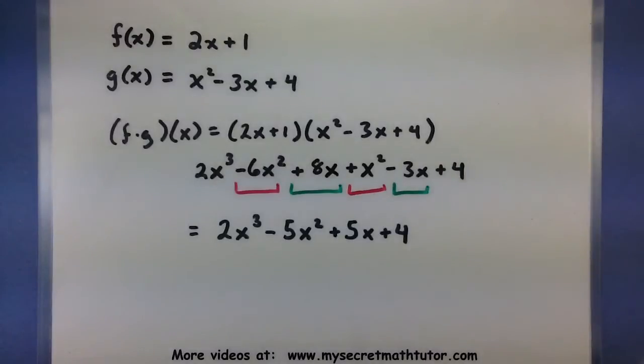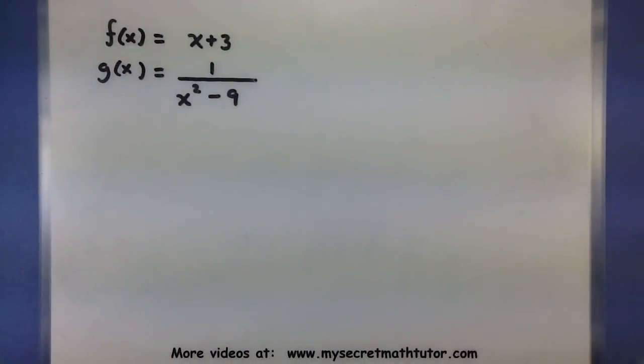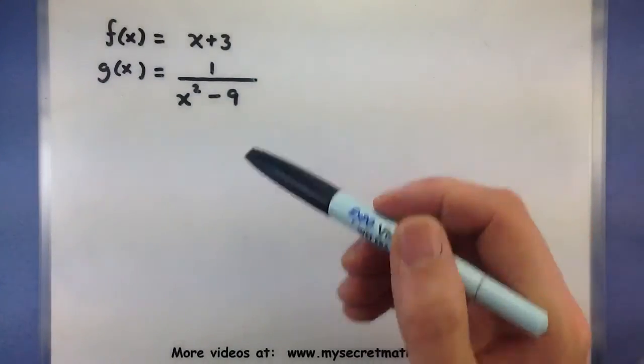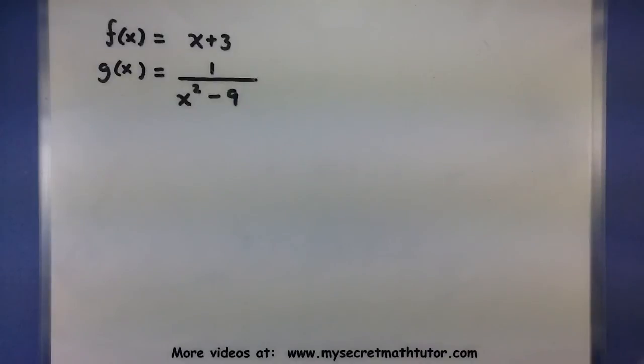And it looks like this one's done. So I've combined the 2 by multiplying and combined any extra terms. Let's do one more example to make sure you've got this process down. Here's a couple of other functions. My first one is x plus 3. And the other one is 1 divided by x squared minus 9.